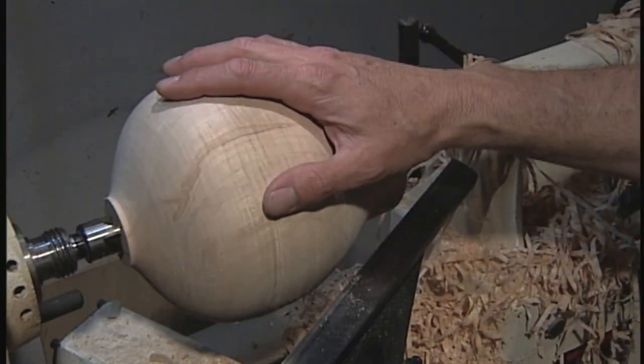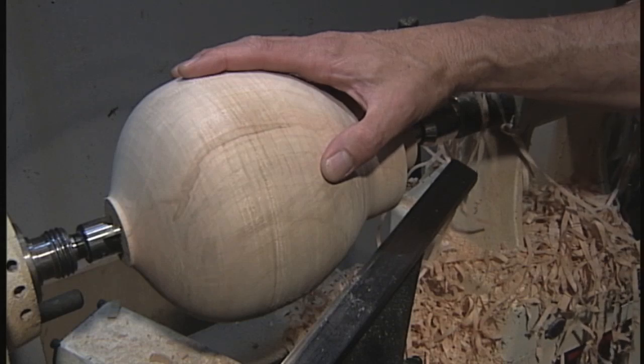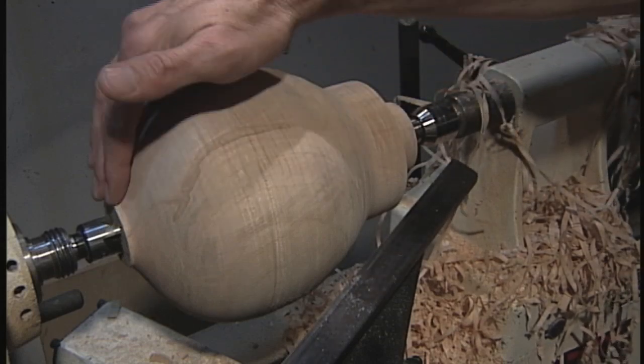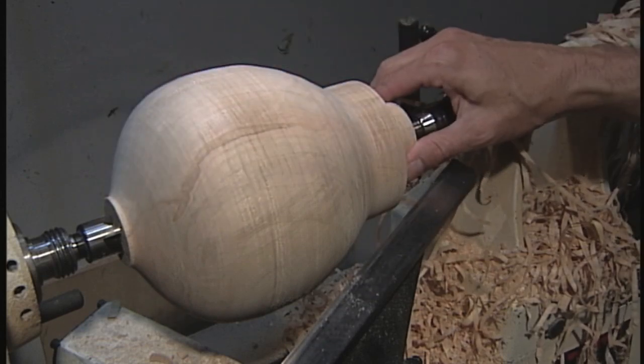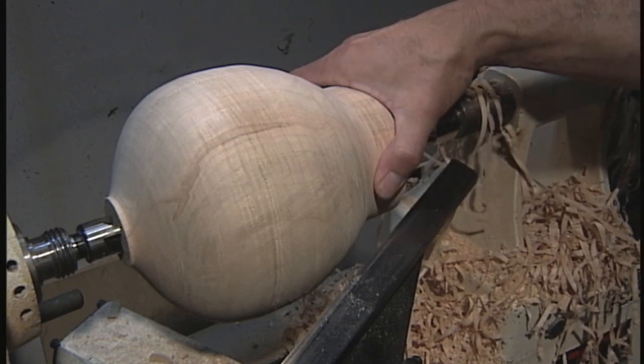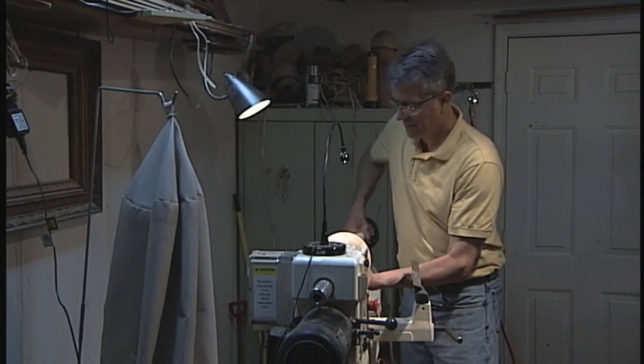Okay, let's recap where we're at here. We've started with a chunk of maple, turned between centers. We did some basic shaping. This is going to be the top of the vessel, the opening. We've cut a tenon down here that we're going to mount into a four jaw chuck. We've left some girth down here so that we've got some weight to keep it well balanced once we reverse chuck it.